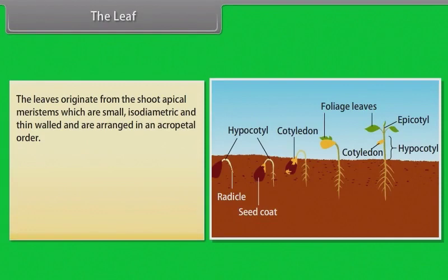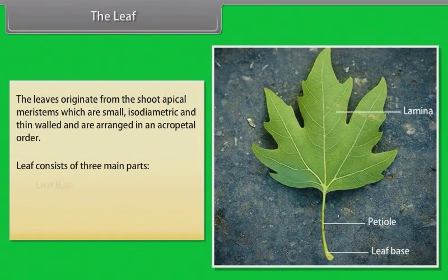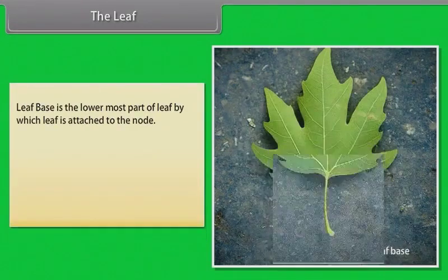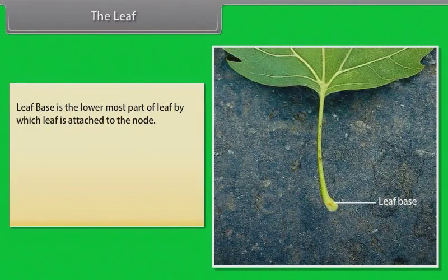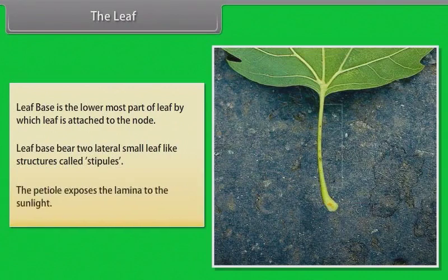Leaves are small, isodimetric and thin-walled, and are arranged in acropetal order. Leaf consists of three main parts: leaf base, petiole, and lamina. Leaf base is the lowermost part of the leaf by which leaf is attached to the node. Leaf base bears two lateral, small leaf-like structures called stipules. The petiole exposes the lamina to the sunlight.